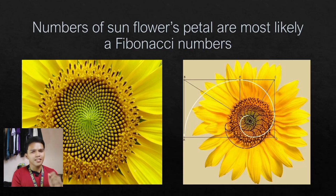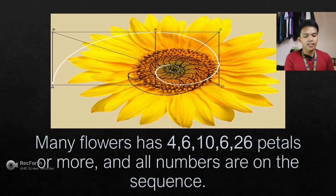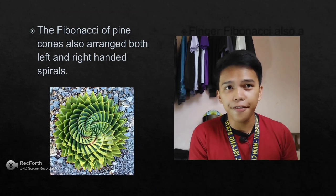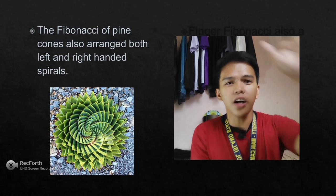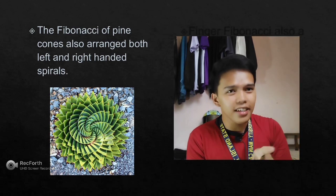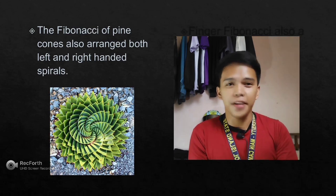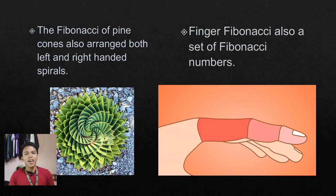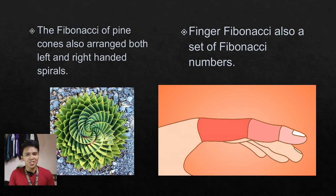For example, a flower may have 4, 6, 10, 16, or 26 or more petals — that is called a Fibonacci sequence. The leaves of pine cones also arrange in left and right-handed spirals, forming a Fibonacci sequence of numbers. Additionally, we have two hands and both hands have five fingers, and each finger is divided into three parts — 1, 2, and 3 — and all of these numbers are Fibonacci numbers.